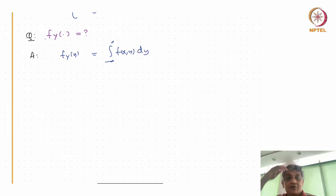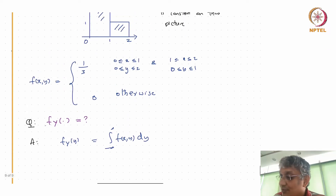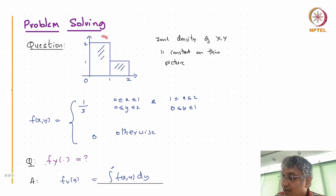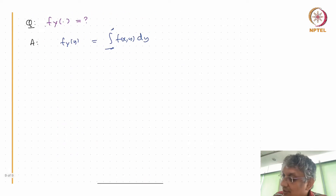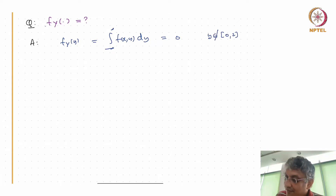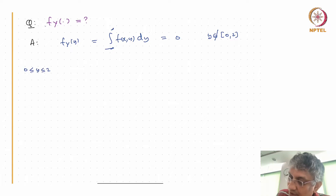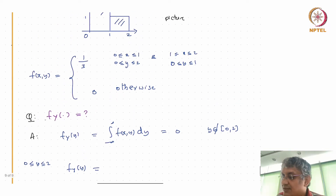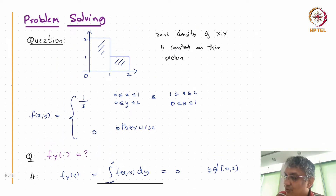This is going to be 0 if y is outside [0, 2], because only when y is in [0, 2] is the density positive. So f_Y(y) = 0 immediately if y is not in the interval [0, 2]. If y is in [0, 2], f_Y(y) splits into two parts.